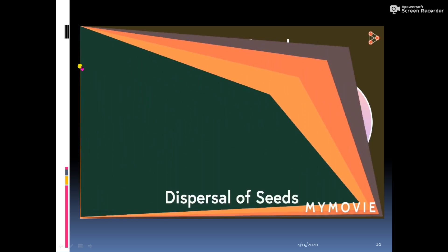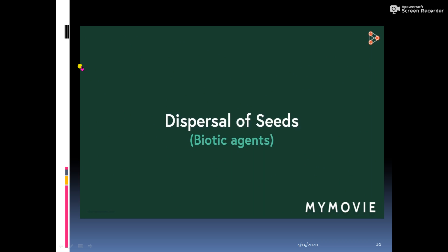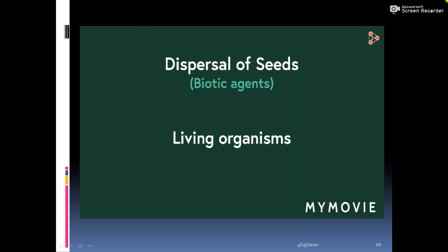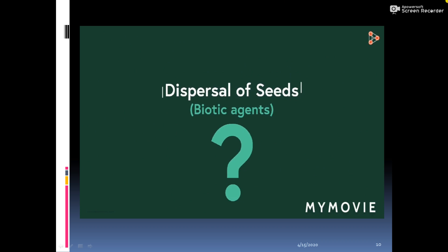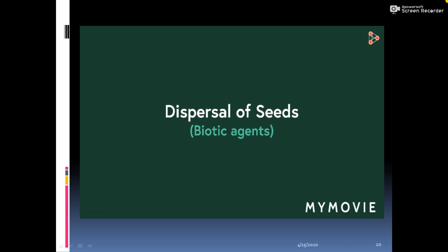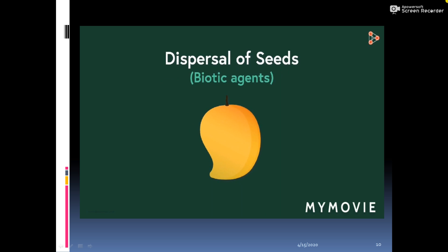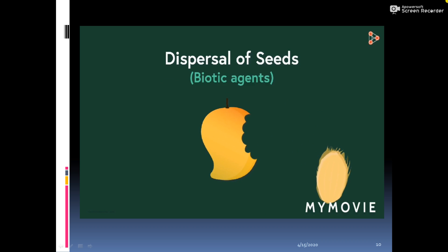Last in the list are the biotic agents — living organisms. Animals are also responsible for dispersal of seeds. After eating juicy fruits, we generally throw away the seeds, and that is how seeds from a plant growing in one area reach a completely different area.